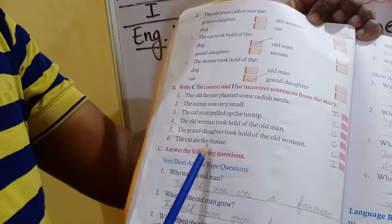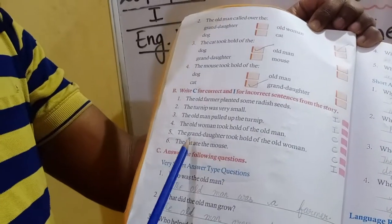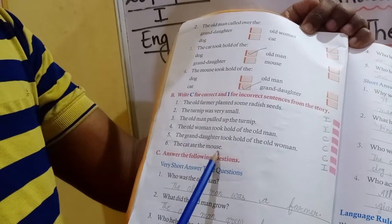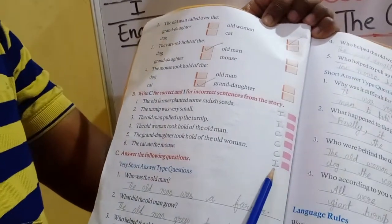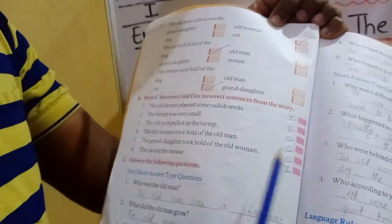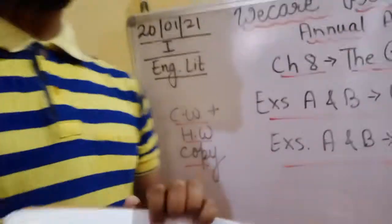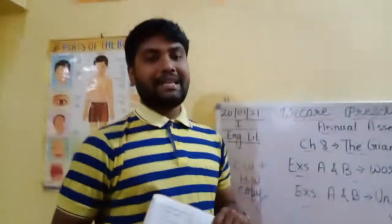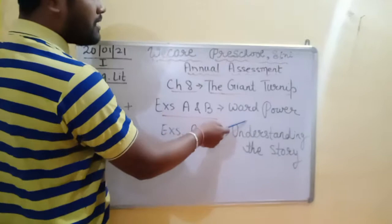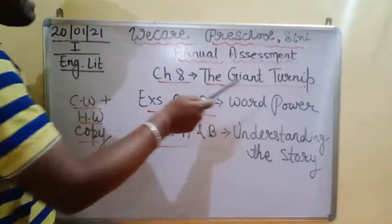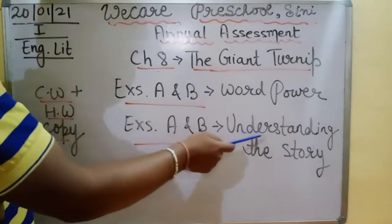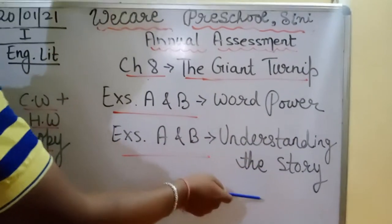The cat ate the mouse — क्या बिल्ली ने mouse को खा लिया? No, write I — I for incorrect. बच्चों, अब हमने Exercise A and B complete किया — Word Power का और Understanding की story का Exercise A and B complete किया.